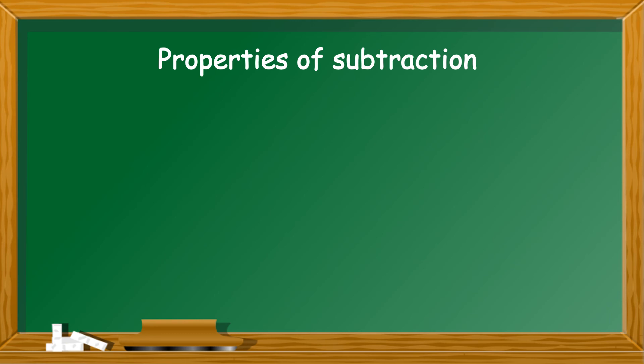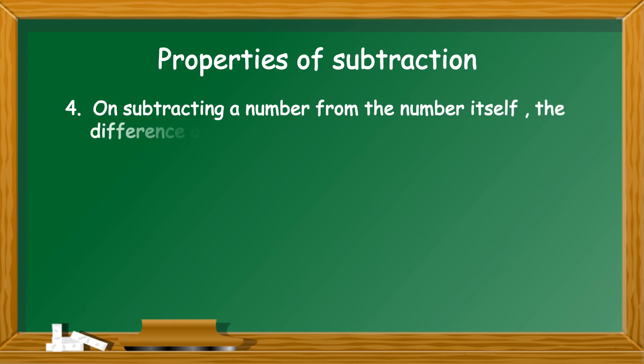Property number 4. On subtracting a number from the number itself, the difference obtained is always 0. For example, 82 minus 82 is equal to 0 or 657 minus 657 is equal to 0.